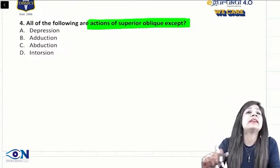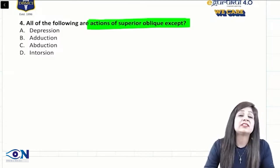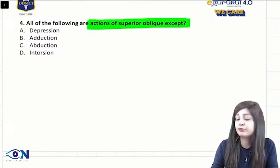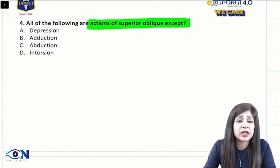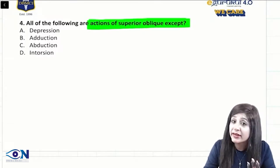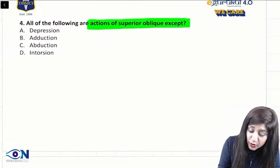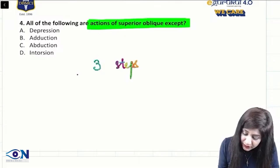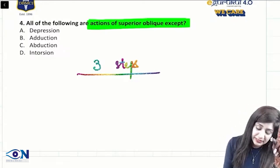Talking about the actions of extraocular muscles — not only superior oblique — I will tell you how to calculate the actions of the extraocular muscles as a whole, because you can get a question relating to the actions of the extraocular muscles. Basically we have got three simple steps in which we can calculate the action of the extraocular muscles.